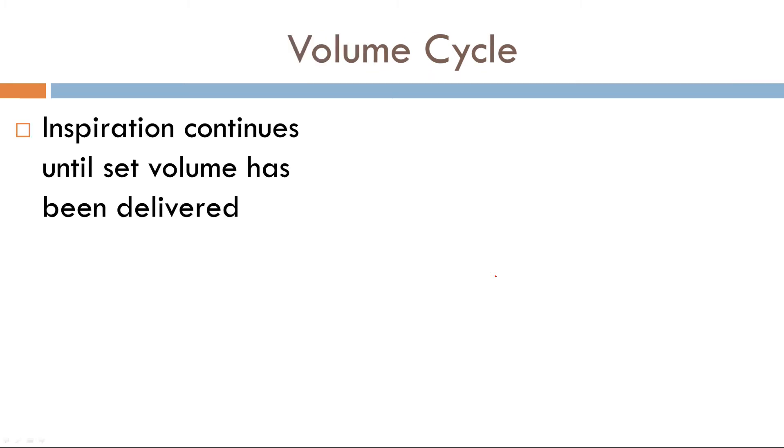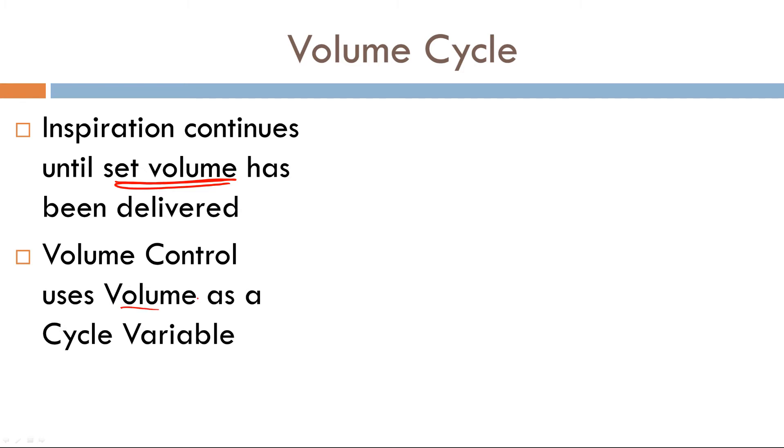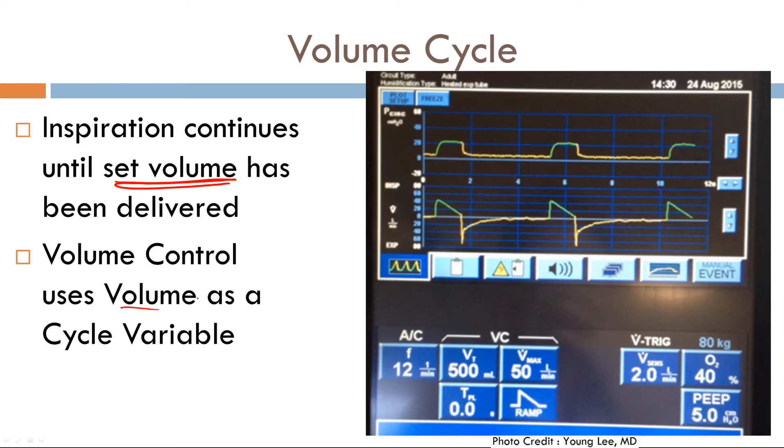Let's talk about volume cycle. The definition again is inspiration will continue until a set volume has been delivered. So interestingly enough, in volume control ventilation, the cycle variable is volume. So let's take a look here. We have pressure. We have flow here. As you can see, the cycle variable has been set to 500 milliliters. So once 500 cc has been delivered, boom, stops delivering your breath.